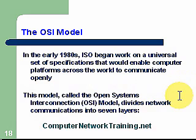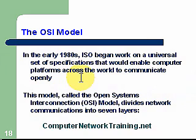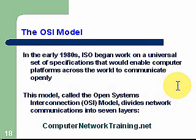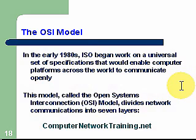In the early 1980s, the OSI began work on a universal set of specifications that would enable computers and computer platforms across the world to communicate openly. It's amazing the age of this technology that we use today. They never expected it to be used in such a large network, but it performs amazingly well even with the millions of people using it simultaneously. This model, called the Open Systems Interconnect, or the OSI model, divides network communications into seven layers, and we're going to discuss each layer in detail.